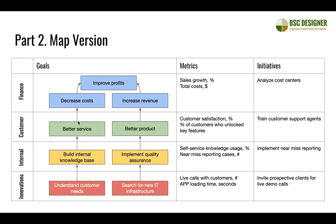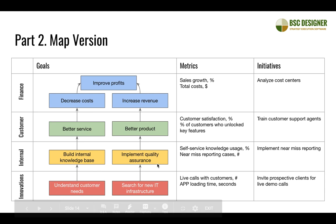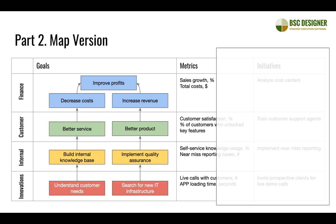Another improvement is assigning different colors to goals. What those colors mean depends on your preference — sometimes color explains the status of a goal (green means okay, red means needs attention), or you can use colors to show that goals belong to different strategic themes. It's up to you. This map is now more visual and easier to read. The biggest positive impact is that the team can understand goals are connected through a cause-and-effect relationship.